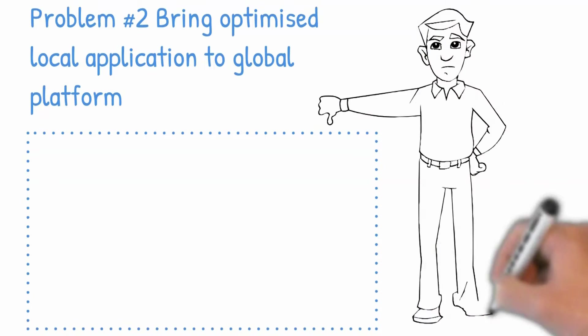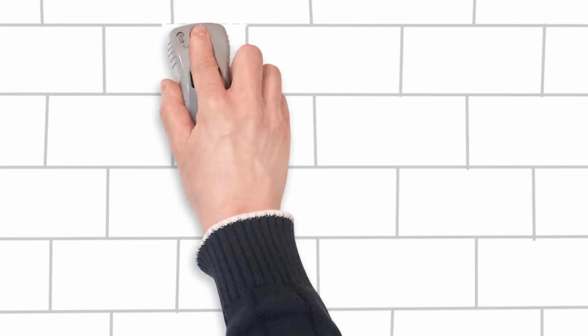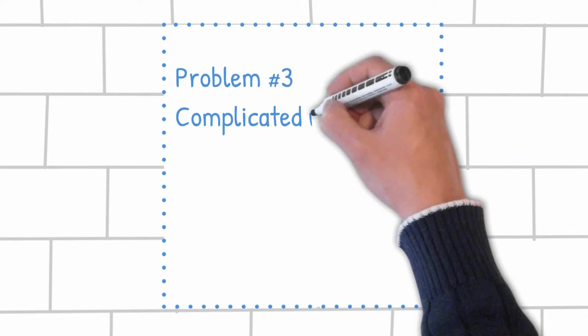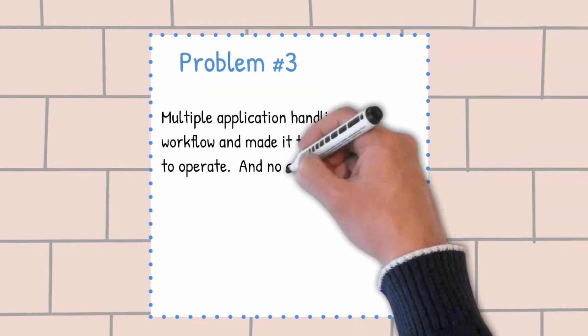Basically the existing applications are not accessed via intranet as well. Problem three is resultant of the above two problems, where multiple applications handling the business workflow made it too complicated to operate.